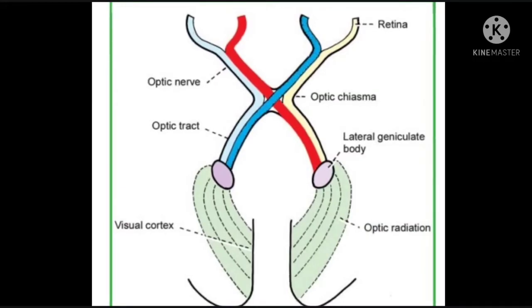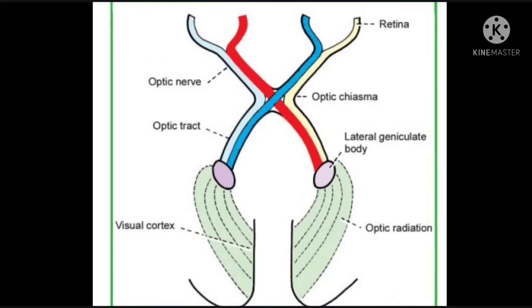And they relay there at the lateral geniculate body in the thalamus, jahan se information transmit hoti hai optic radiations ki taraf, jinhe hum geniculo calcarine fibers bhi kehte hai.